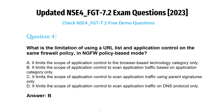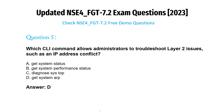Question 4: What is the limitation of using a URL list and application control on the same firewall policy in NGFW policy-based mode? A) It limits application control to browser-based technology category only. B) It limits application control to scan traffic based on application category only. C) It limits application control to scan traffic using parent signatures only. D) It limits application control to scan traffic on DNS protocol only. Answer: B.